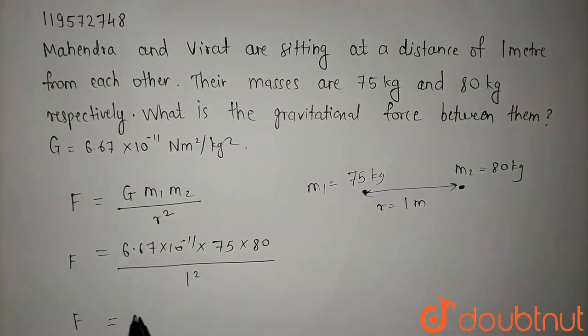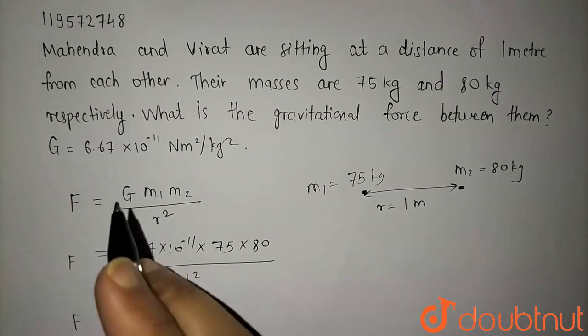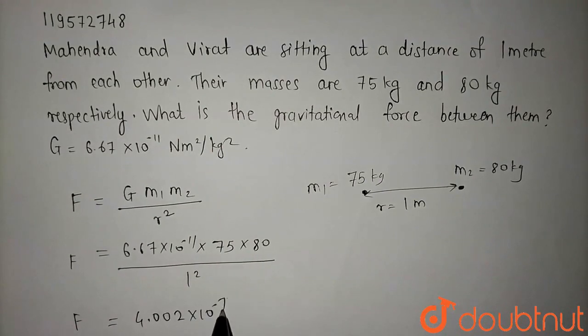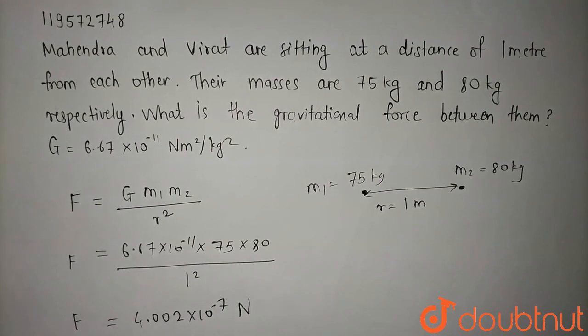When we do this calculation, the gravitational force between Mahendra and Virat will be 4.002 into 10 raise to minus 7, and its unit is Newton.